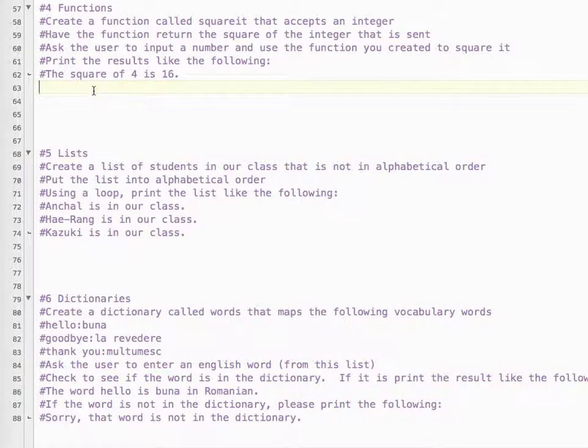Okay, so we're sending a value and returning a value. Ask the user to input a number and use the function you created to square it. Print the results like the following: Square of four is 16.